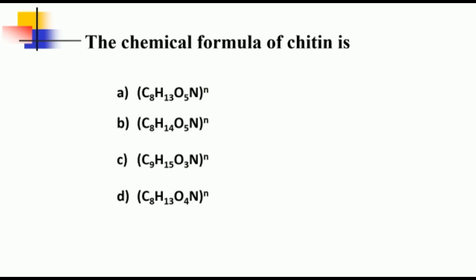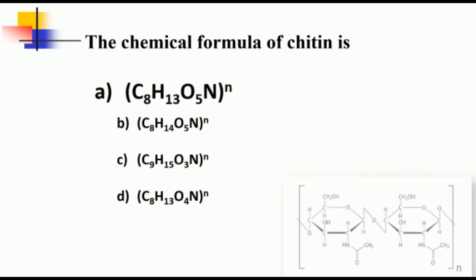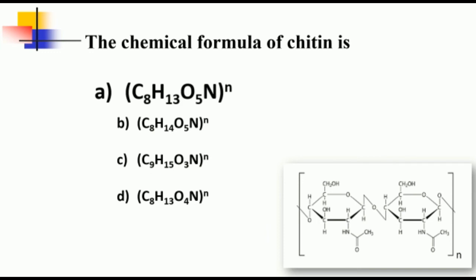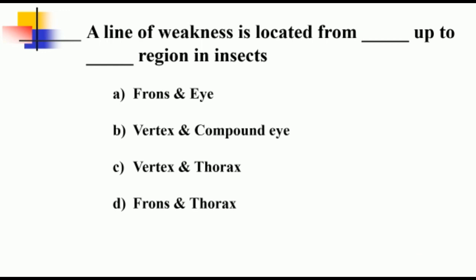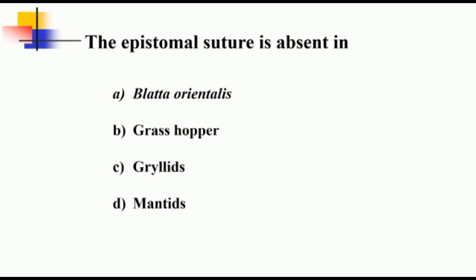The chemical formula of chitin is C8H13O5N. It is a polymer of N-acetyl-D-glucosamine having this structure. A line of weakness is located from frons region and extends till the thorax region in insect. Coming to the last question of the video: the epistomal suture is absent in Blatta orientalis, which is the oriental cockroach. Hope the video was useful, thank you.